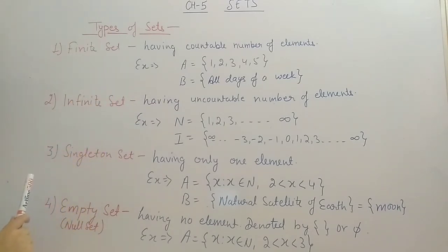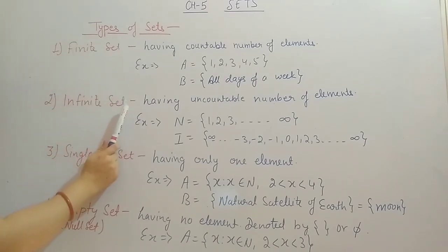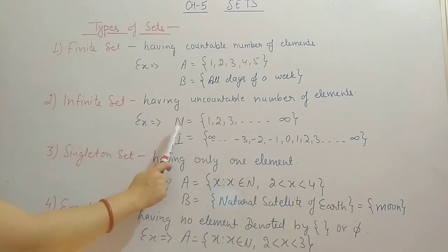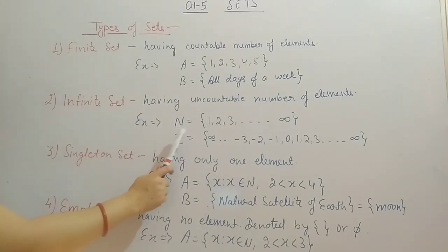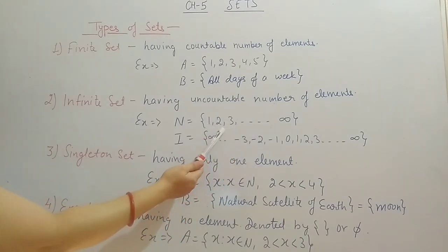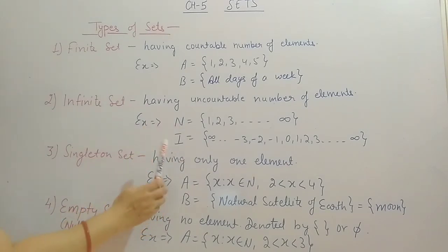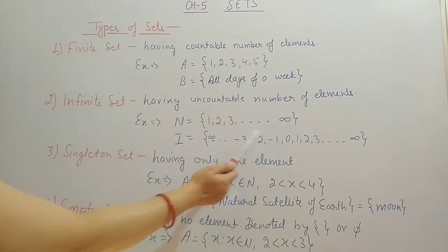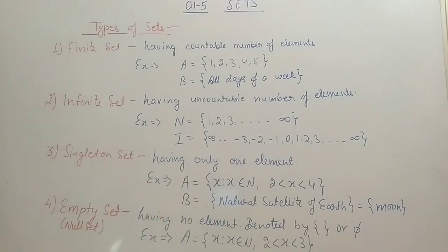The second type is the infinite set, which is the opposite of finite — it is uncountable. If a set has infinite elements we call it an infinite set. For example, the set of natural numbers starts from 1, 2, 3 and goes up to infinity. Similarly, the set of integers cannot be counted — it goes to infinity in both the negative and positive directions.